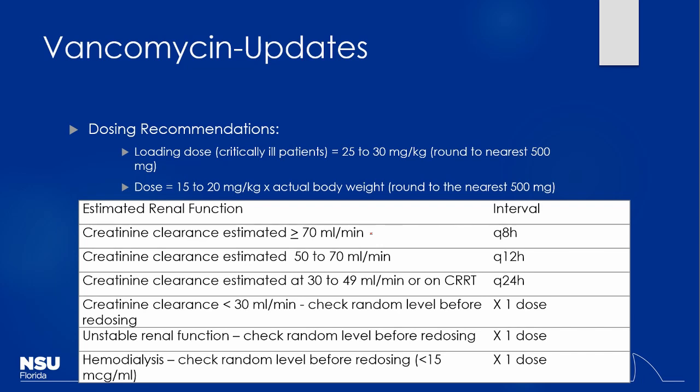If creatinine clearance is greater than 70, you can give the drug every 8 hours. As renal function declines, you give it less frequently. In the 30–49 range, you're already giving it Q24 instead of Q8. Below that, you may give single pulse doses — give a one-time dose, get random levels, and redose when the patient gets into the target range. Without checking levels in a patient with poor renal function on a fixed schedule, you'd see accumulation and toxicity.